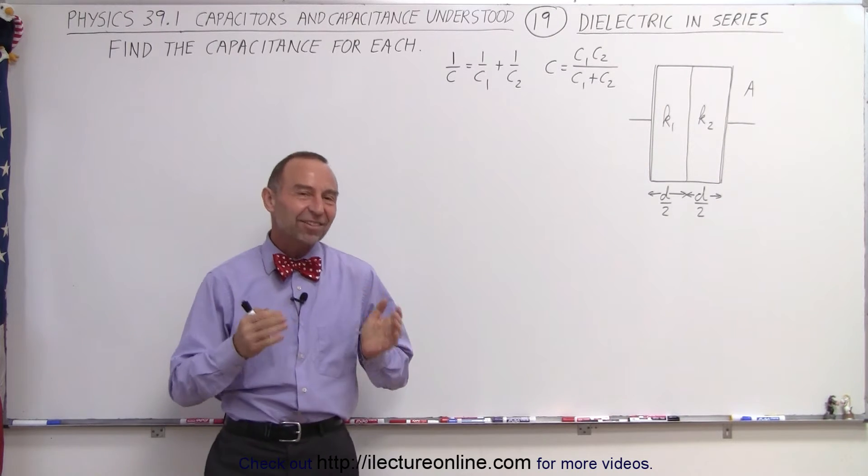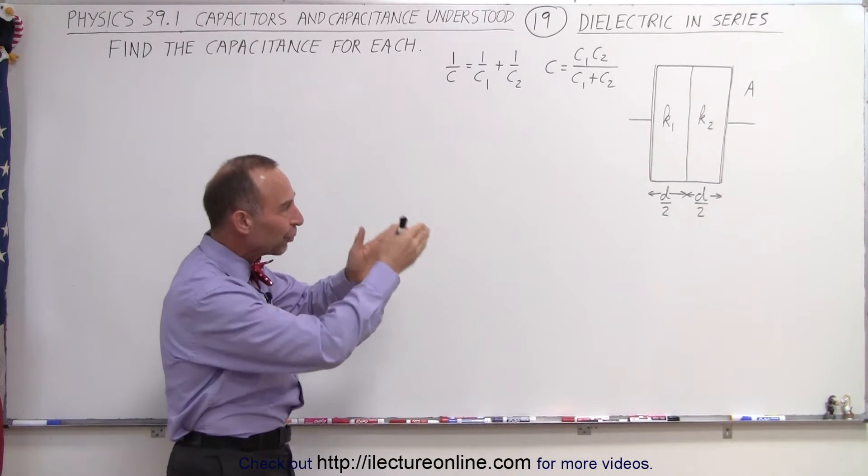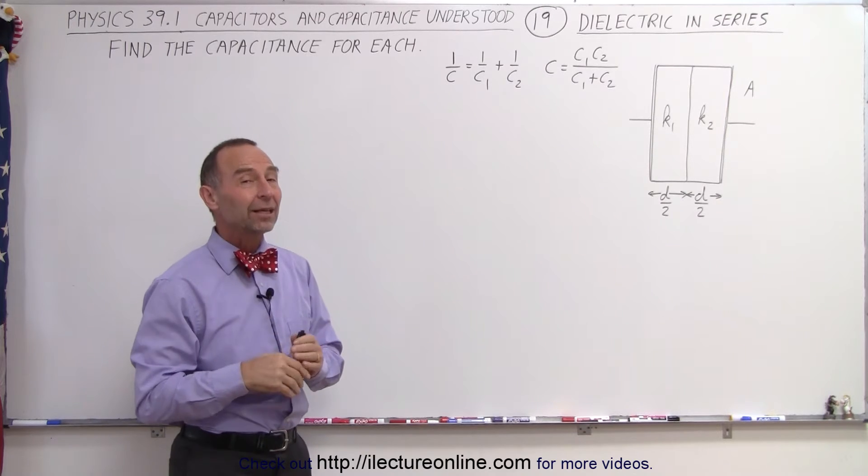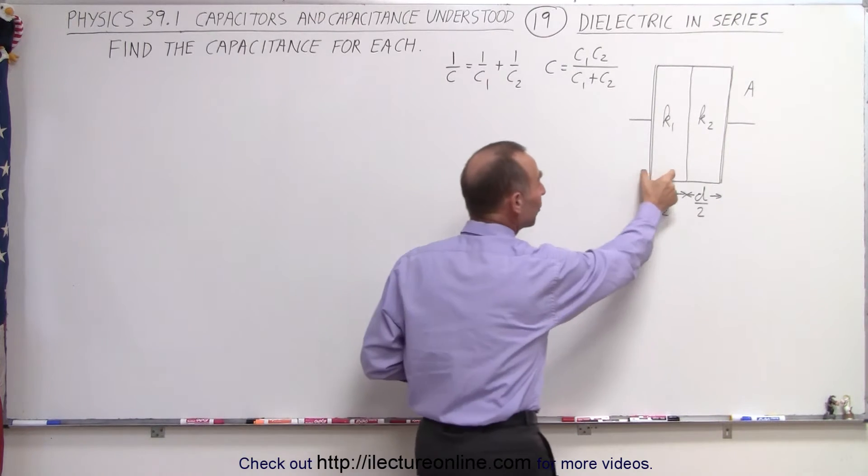Welcome to ElectronLine. In this example, we have the dielectric vertically instead of horizontally, which in essence gives us two capacitors.